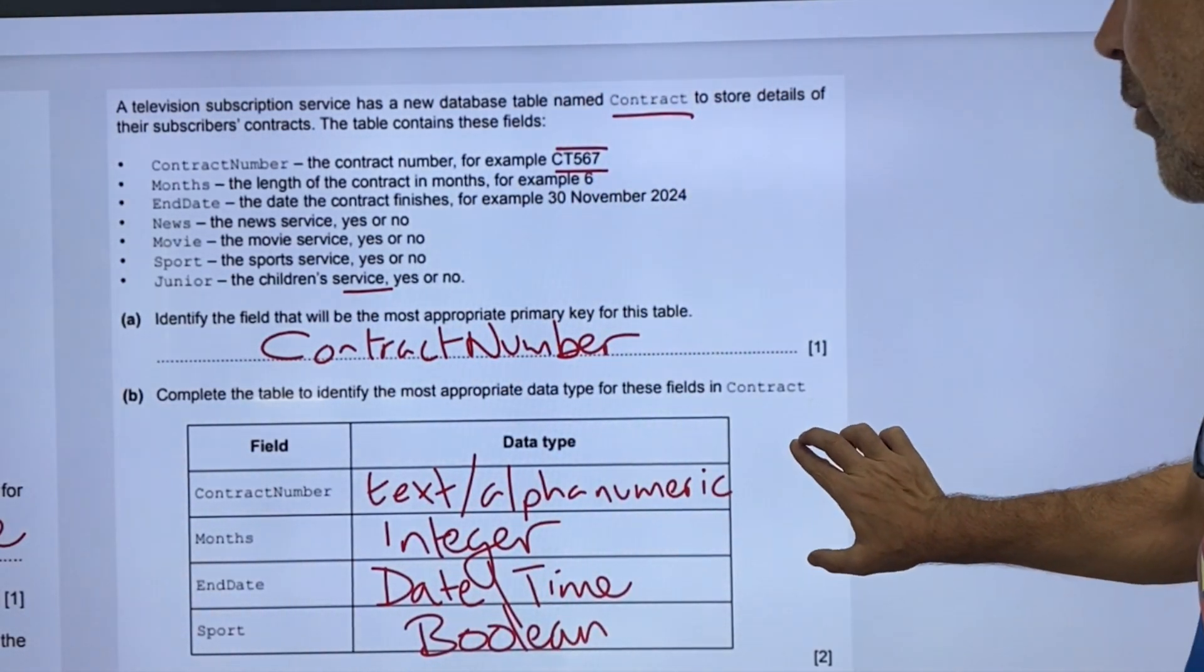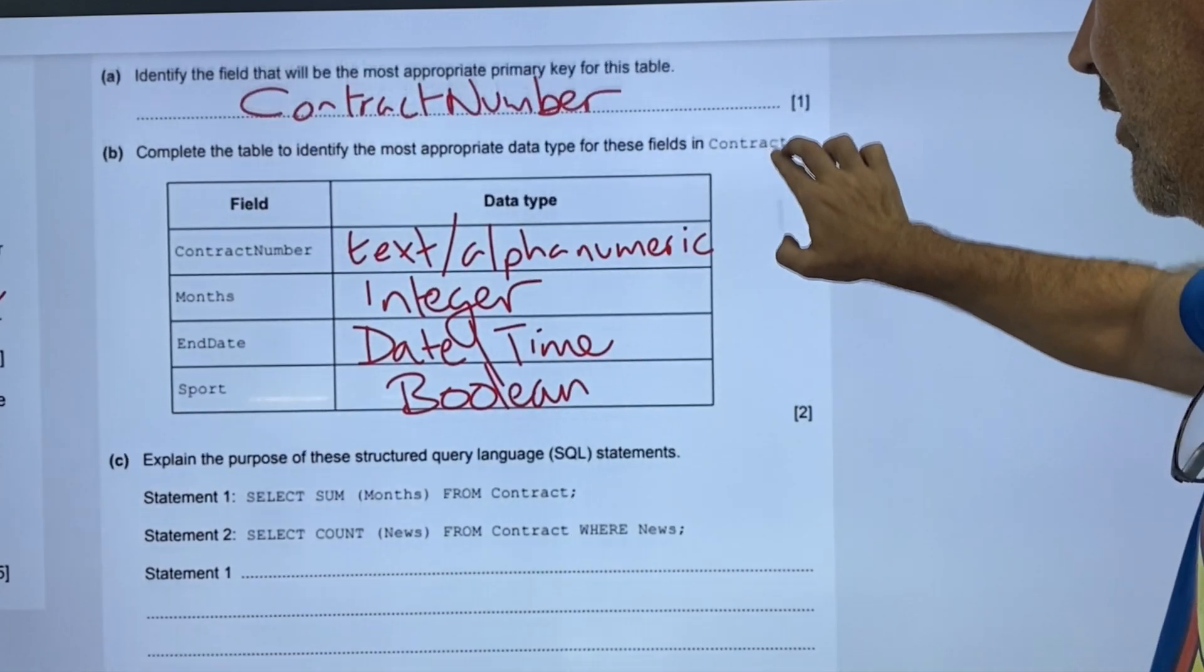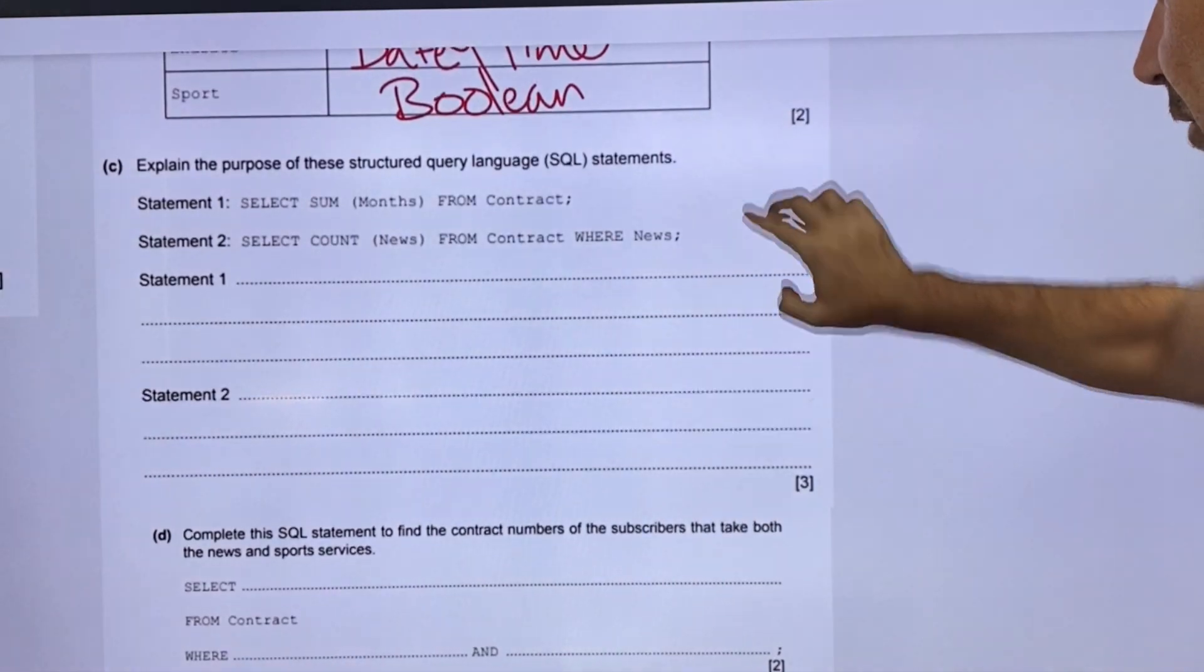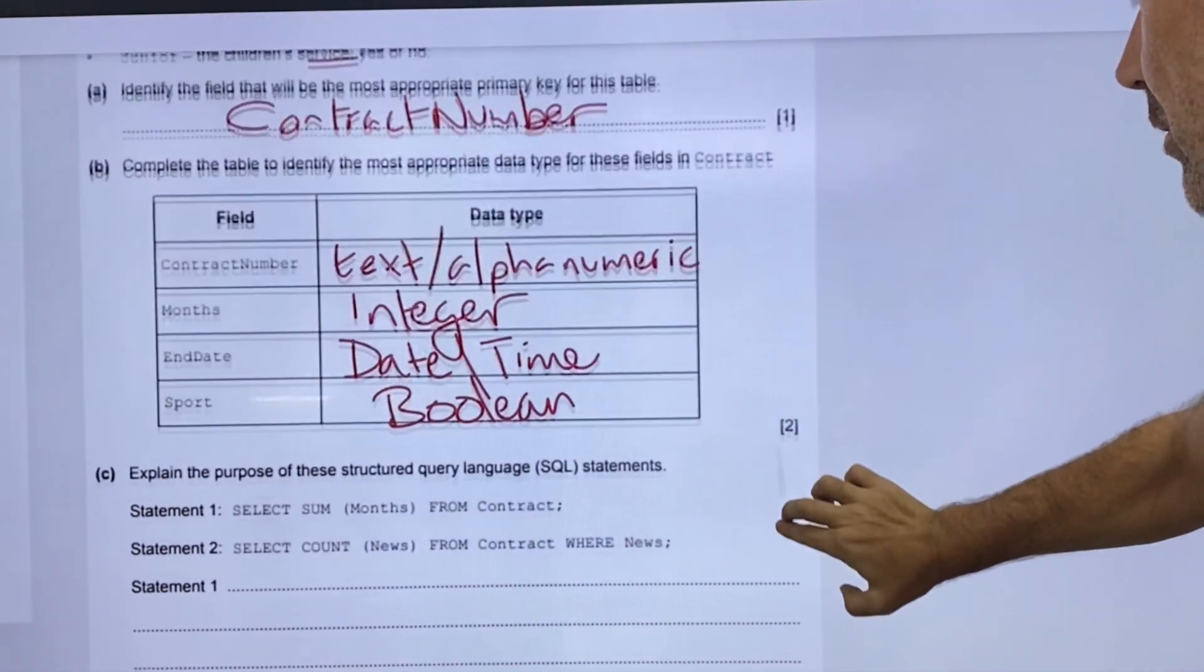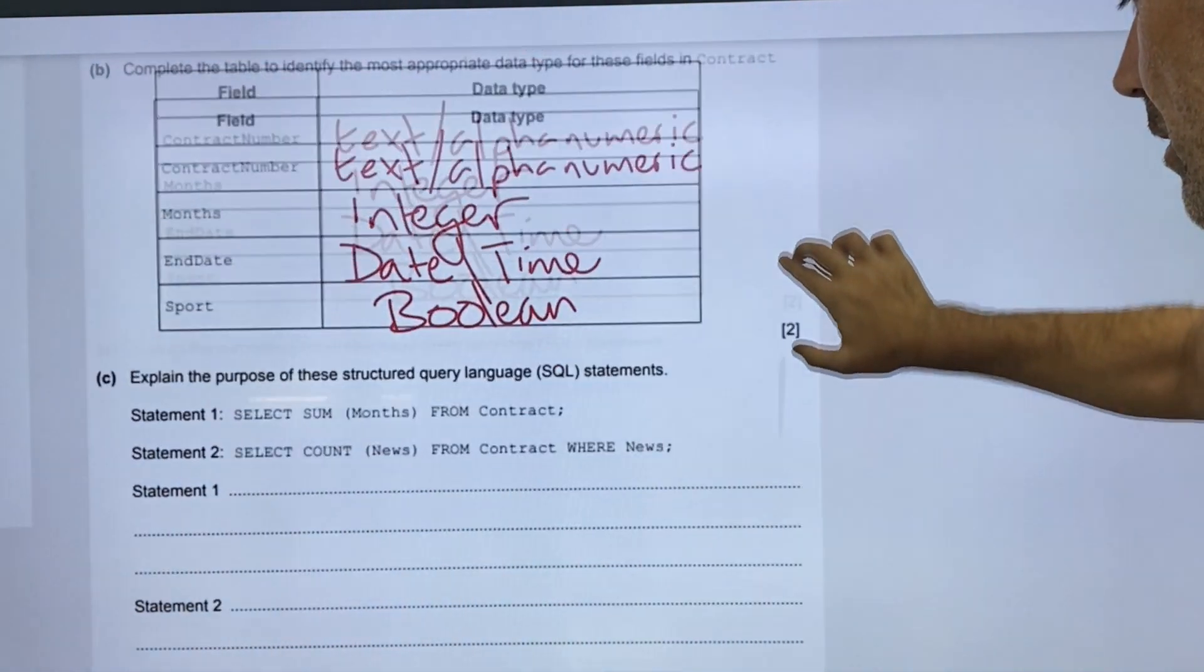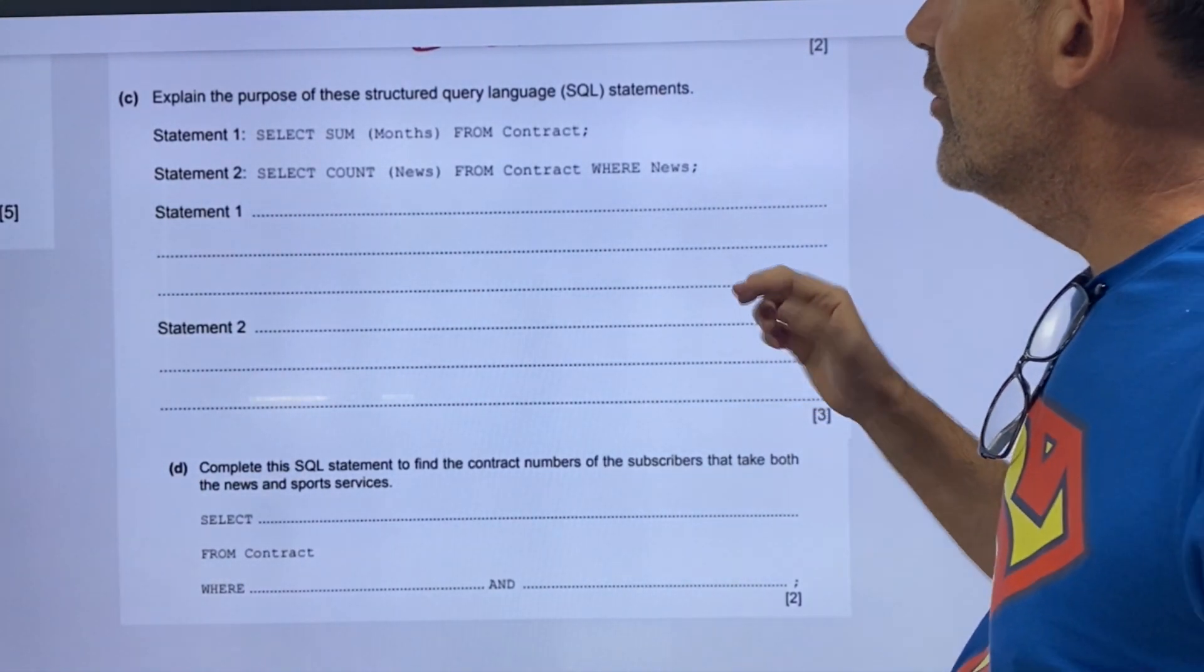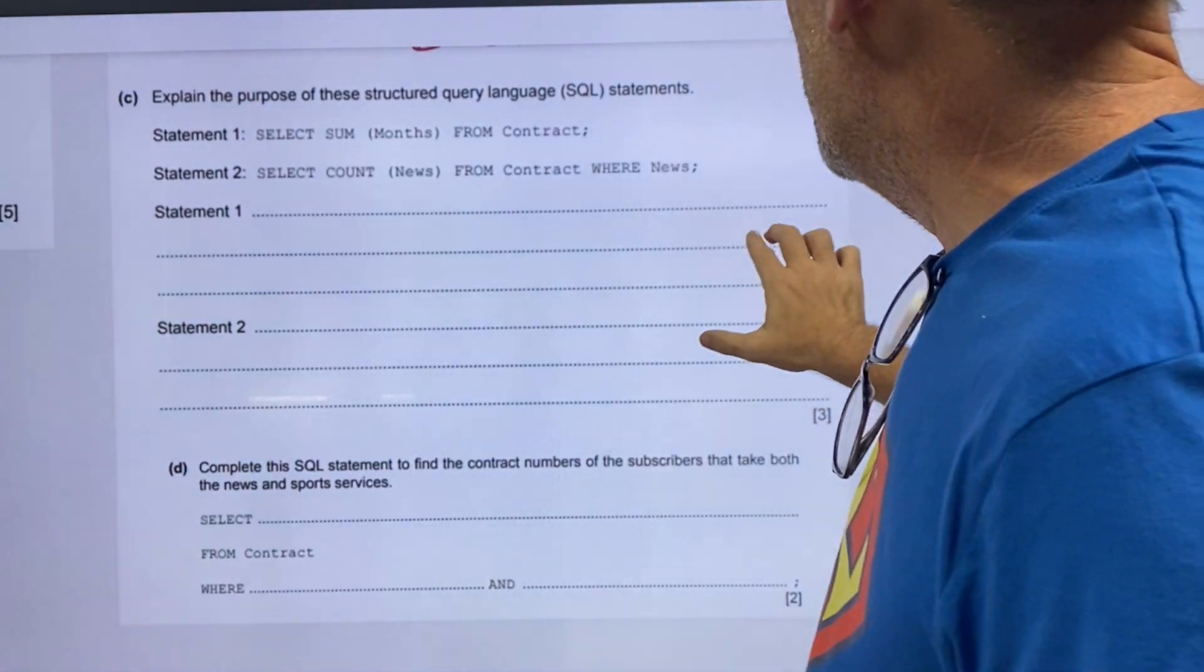So that's three marks. Now we've got three more marks here, but we just, oh no, there's more marks. Two. So, I've got one, two, three, four, five, six, seven, eight. Eight marks.